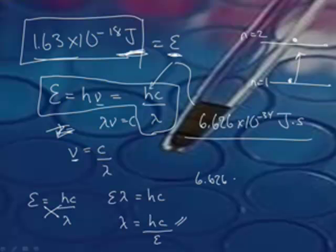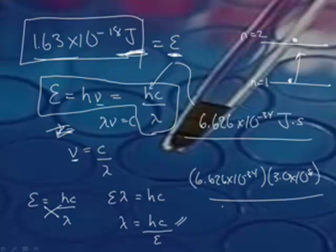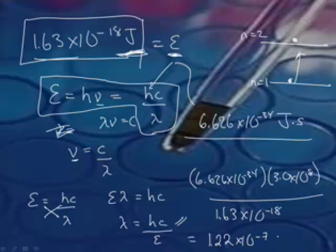Plug and chug. So that'll be 6.626 times 10 to the minus 34 times the speed of light, which is 3.0 times 10 to the 8th, divided by my energy, which was 1.63 times 10 to the minus 18th. And I get 1.22 times 10 to the negative 7. And that unit would be, I didn't use my units here. The wavelength is measured in meters. So that would be meters.